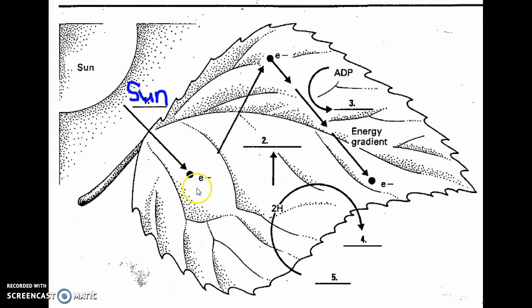That's going to be absorbed by the chlorophyll in the thylakoid membranes - that's where this is happening. The energy causes electrons to jump up into higher energy states, and as they fall down through the energy gradient, they give off energy.